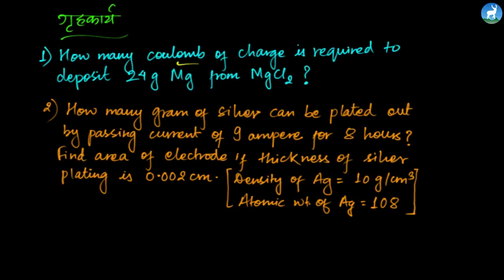Additional practice questions: How many coulombs of charge are required to deposit 24 grams of magnesium from magnesium chloride? How many grams of silver can be plated out by passing a current of 9 amperes for 8 hours? Find the area of electrode if the thickness of silver plating is 0.002 cm and density of silver is 10 g/cm³, atomic weight of silver 108.